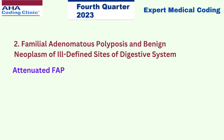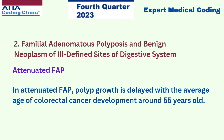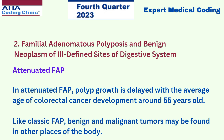In attenuated FAP, polyp growth is delayed, with the average age of colorectal cancer development around 55 years old. Like classic FAP, benign and malignant tumors may be found in other places of the body.